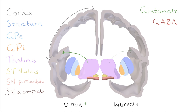I'm going to quickly write out the neurotransmitters released by each of these parts listed on the left — this is only relevant to these particular pathways. The cortex releases glutamate. The striatum and globus pallidus, both parts, release GABA. The thalamus and the subthalamic nucleus release glutamate. The pars reticulata releases GABA, and the pars compacta, as we'll discuss down the track, releases dopamine.